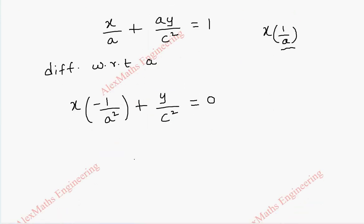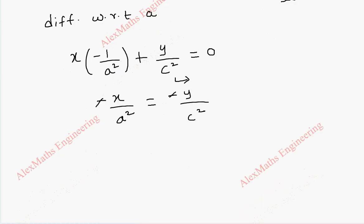This becomes -x/a² = -y/c². Canceling the negatives, we get x/a² = y/c².